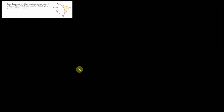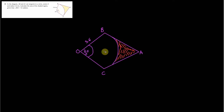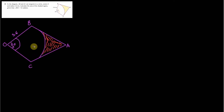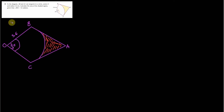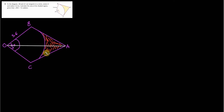Feel free to pause the video and work through it and compare your answer with mine if you'd like, otherwise I'm going to go ahead and start working through this. I've already made a sketch ahead of time — I like to make my own sketches, just to save time. It strikes me that there are a few different ways we can solve this. We could drop an altitude or create a line between O and A, find the area of the two triangles, find the area of the sector, subtract that, and we'll get the shaded region.